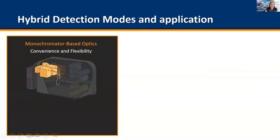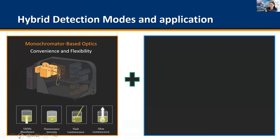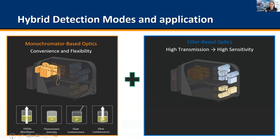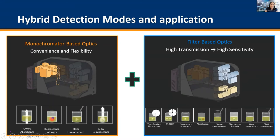The hybrid multi-mode detection is where the BioTek readers truly shine. You have the convenience and flexibility of monochromator-based optics, which allows a vast range of applications — from absorbance, fluorescence, and luminescence — in combination with filter-based optics. BioTek uses high bandwidth filters for ultra-sensitivity, enabling a variety of assays: time-resolved fluorescence, alpha, fluorescence polarization, and more.